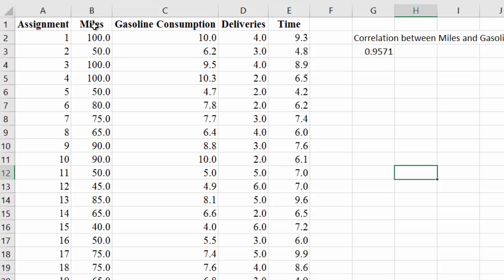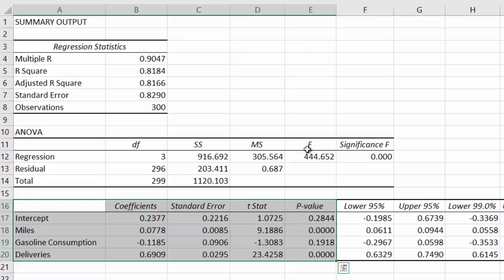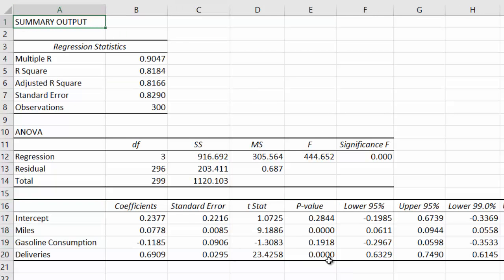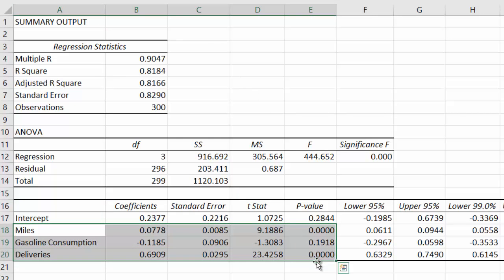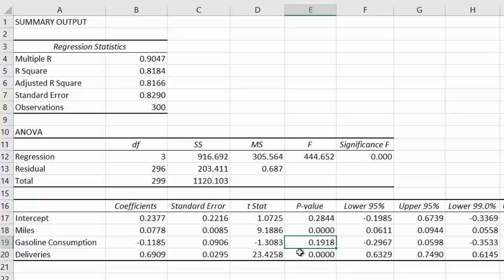So running a regression with these three independent variables gave us an output that is shown here. Looking at the p-values of the x variables, we see that the p-value for the gas consumption is 0.1918, definitely greater than 0.05. So the p-value here is too large for the gas consumption variable to be significant. It looks like there is no relationship between the gas consumption and the travel time.